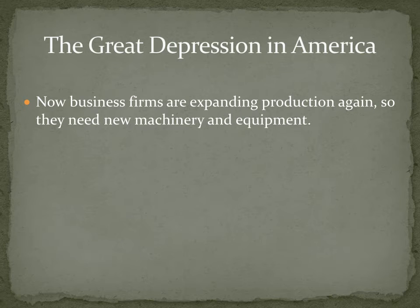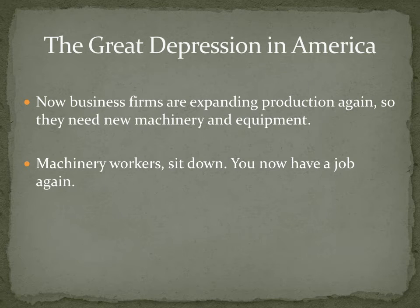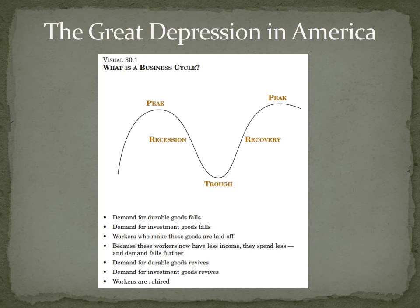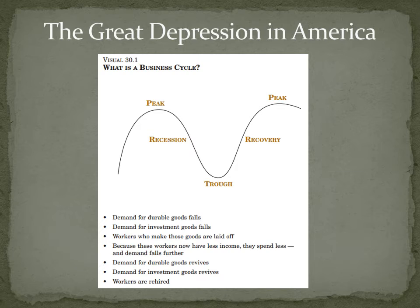Business firms are expanding production, so they need new machinery and equipment — machinery workers, you now have a job again. This is the business cycle: we have a peak, then usually a recession and a giant trough — that's what the Great Depression was — then a recovery and a peak again. In the trough, demand for goods falls because nobody has money to buy goods. As it recovers, demand for goods rises again, and then demand for goods creates jobs.